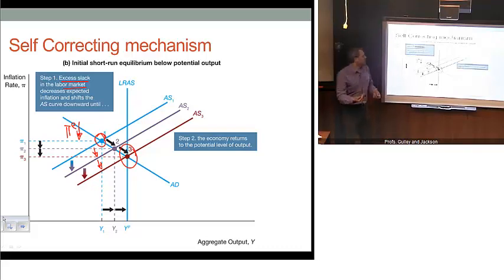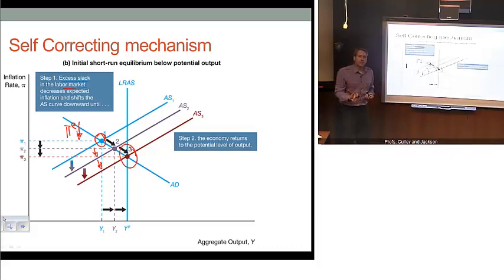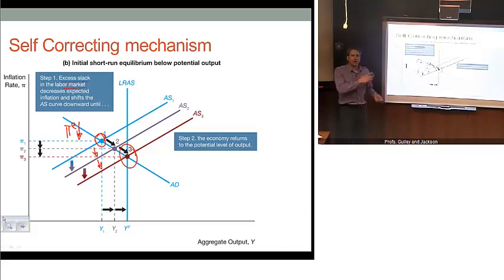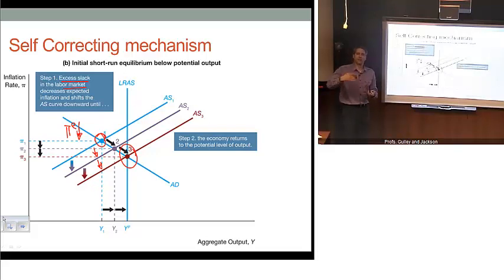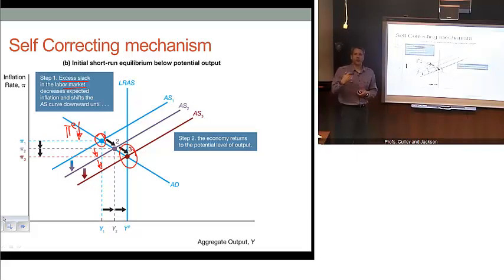So that's the self-correcting mechanism. Given shocks to the economy with nothing else happening, we should expect in this theoretical model that the economy is going to self-correct and push us back to that equilibrium. In practice, that's not necessarily the case, and that complicates our story and also illustrates the need for policy, which we'll talk about in subsequent lectures.